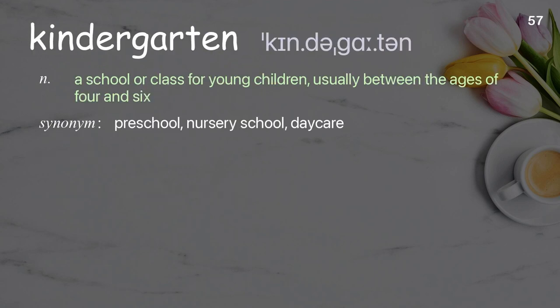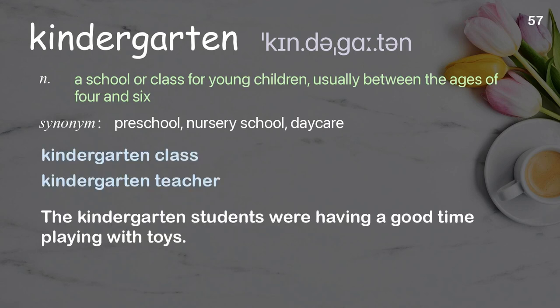Kindergarten. A school or class for young children, usually between the ages of four and six. Examples: kindergarten class, kindergarten teacher. The kindergarten students were having a good time playing with toys.